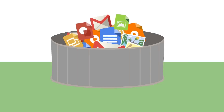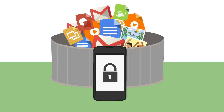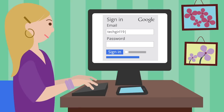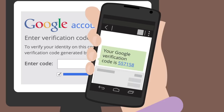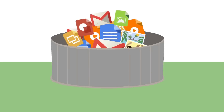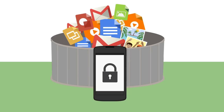Two-step verification helps keep others from accessing your account. Because each time you sign in, Google sends a short code to your phone that you type in to access your account. This gives you two layers of security, with something you know — your password — and something you have — your phone.